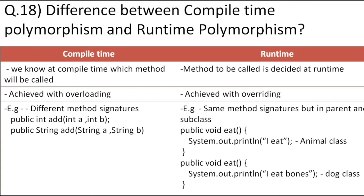Runtime polymorphism is achieved by method overriding. For example, suppose we have an eat method in the Animal class and also in the Dog child class. In the Animal class it prints 'animal eats', but in the Dog class we override it to print 'dog eats' — same method, different implementation. In overloading, the method signature is different. In overriding, there is a parent-child relationship and the method signature must be the same.